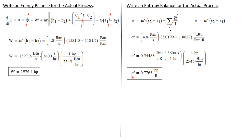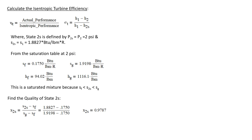This is a positive entropy production, as it must be for this real process to take place. Now let's calculate the isentropic turbine efficiency. This is the actual performance of the turbine divided by its performance were it undergoing an isentropic process. An isentropic process is idealized — we can imagine it but not truly build it, because isentropic means reversible: no irreversibilities, no entropy production, no heat transfer, and constant entropy throughout.